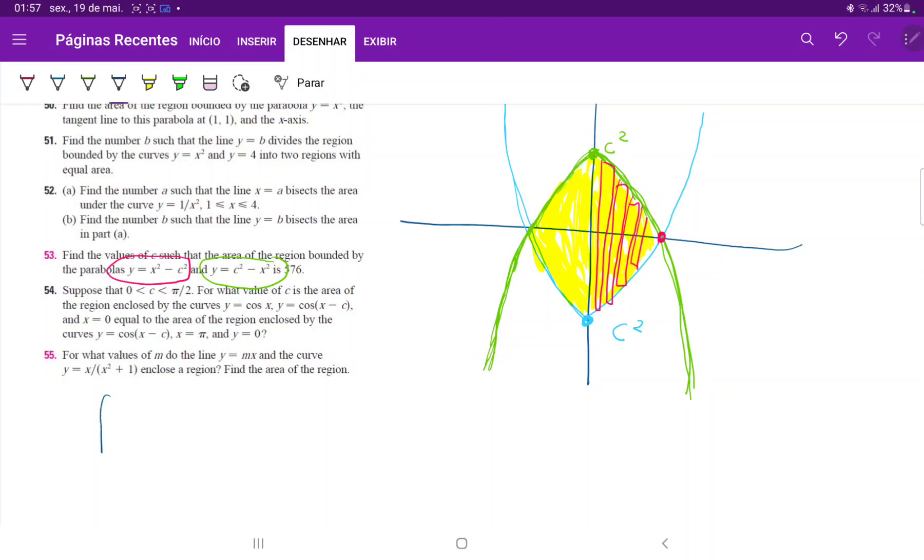So this is the integral from 0 all the way to, let's call this b, we don't know what that is, of the upper curve. So the upper curve is the negative parabola, the one in green, of c² - x², and then minus the lower curve. So minus x² - c². Let's see if that is correct. Yes. So minus dx, and this is equal to 288.